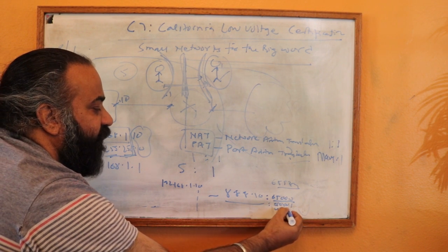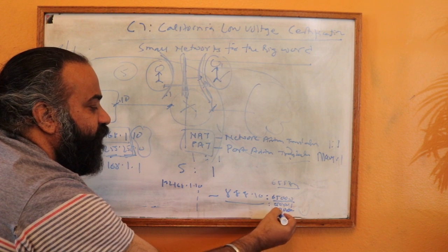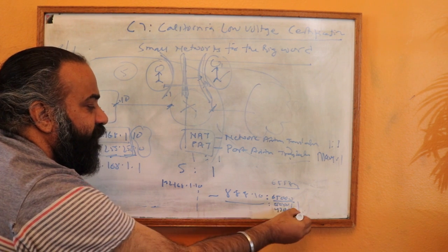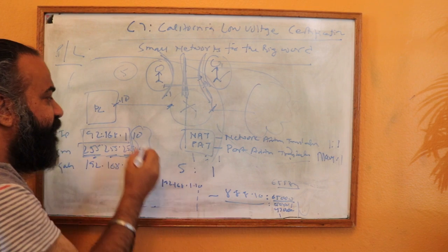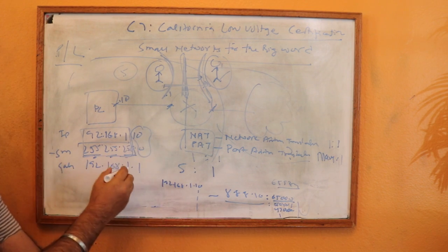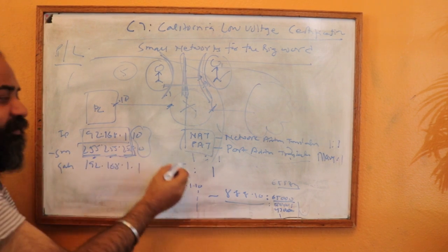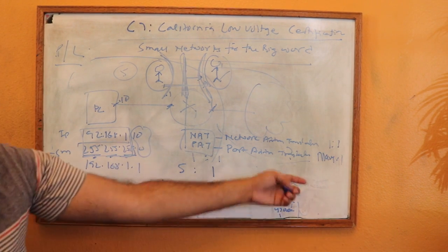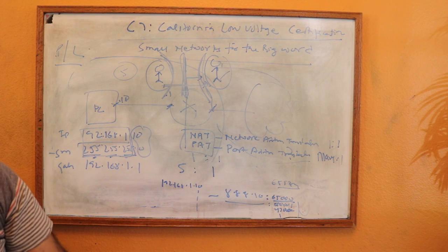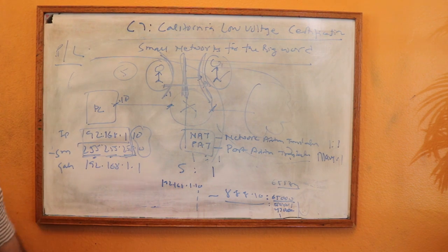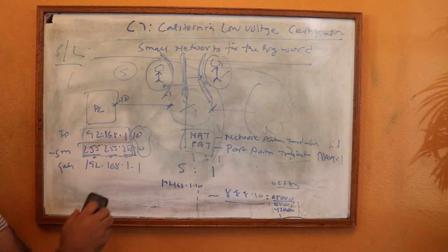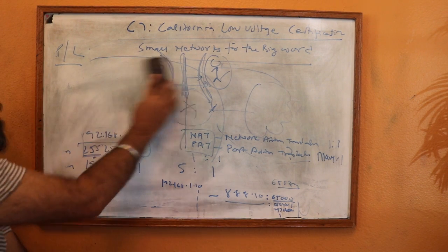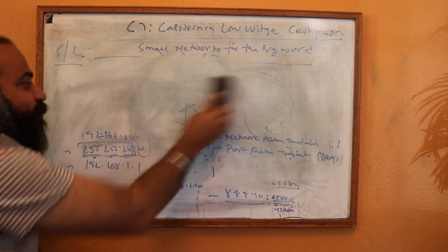It could be 47000 or some other number. This way, a large number of IP addresses — maybe 65,000 — can be converted into one IP address using Port Address Translation. Hopefully this is clear how Network Address Translation actually happens, and how you basically save the IP address space.